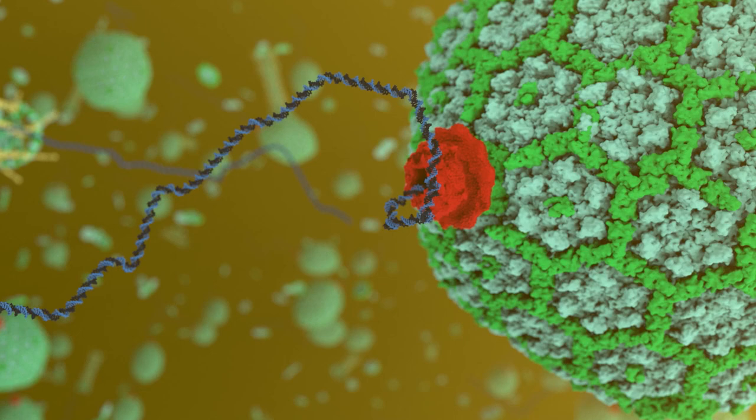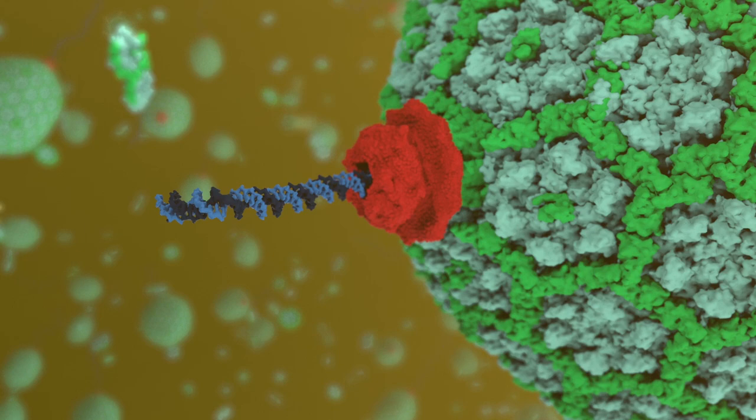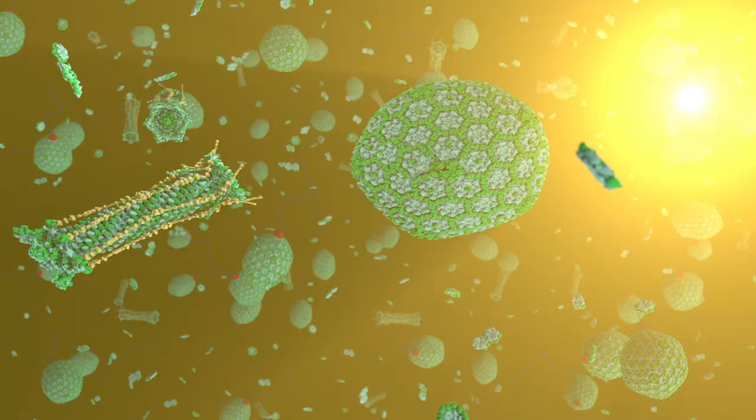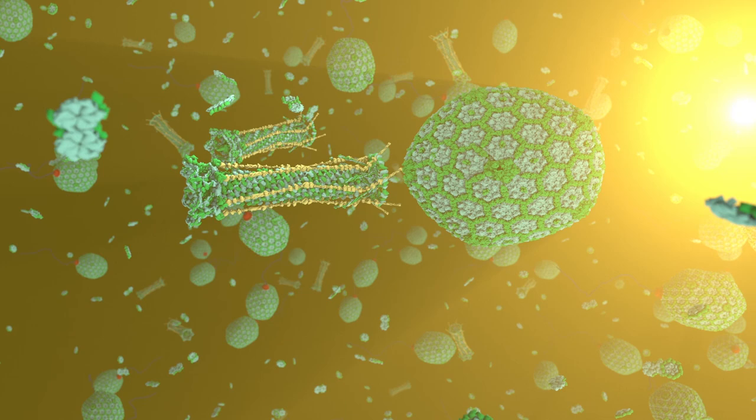Once the head is full, the packaging motor cuts the DNA and the complex falls off an expanded head. The shaft and long-tail fibers are attached to complete the infectious particle.